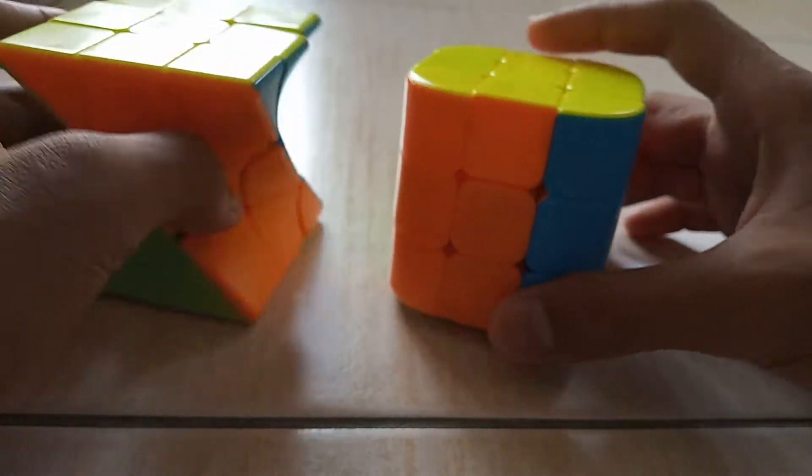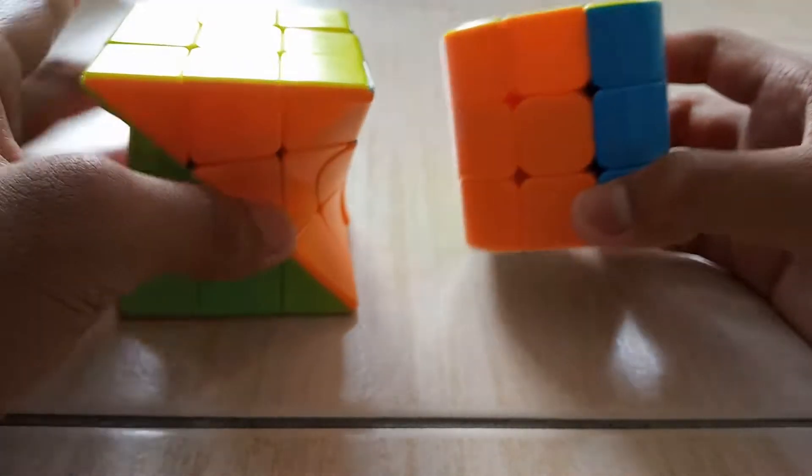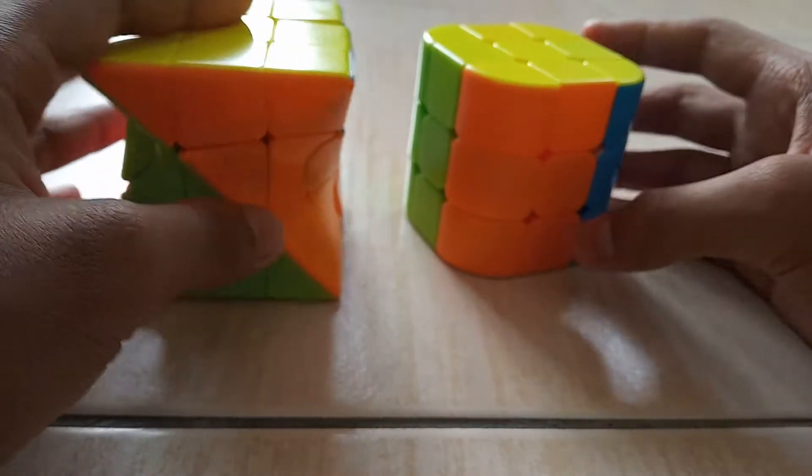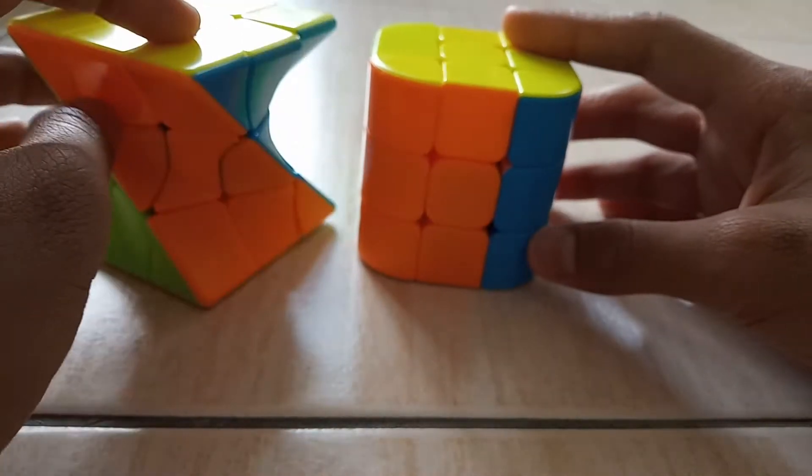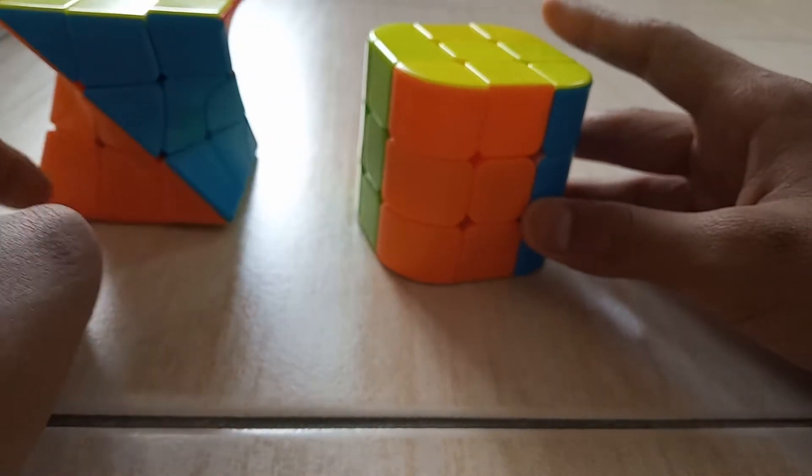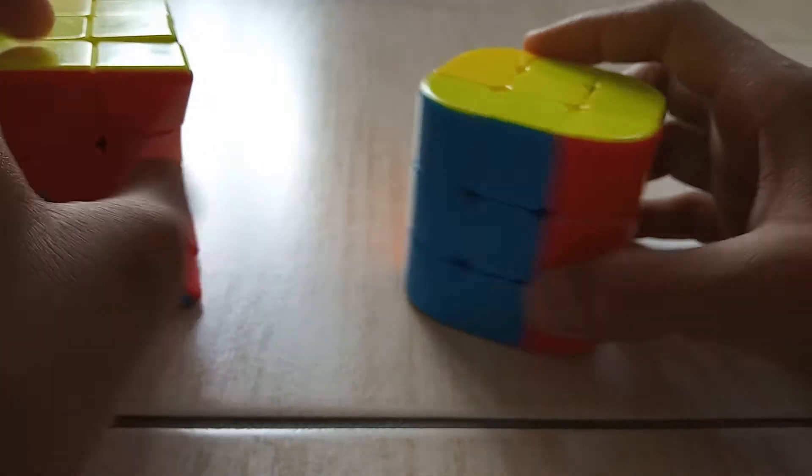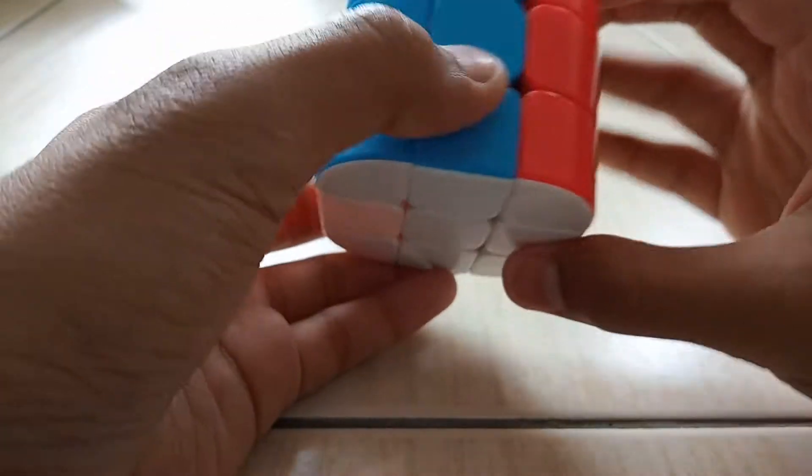I think both of them from Qiyi and I think it's the same way we are supposed to solve them because if you see, yeah I think it is the same, orange and blue. I think it might be an easy cube.